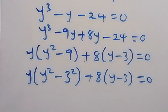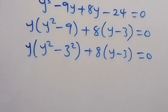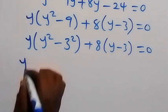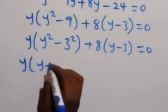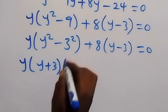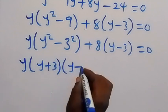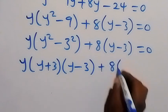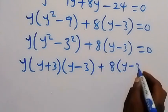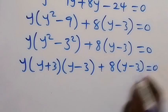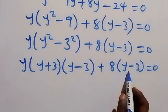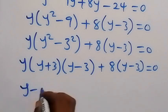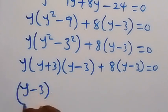We can write 9 as 3 squared, so y(y² − 3²) + 8(y − 3) equals zero. This is a difference of two squares and can be factorized. This gives y(y + 3)(y − 3) plus 8(y − 3) equals zero.